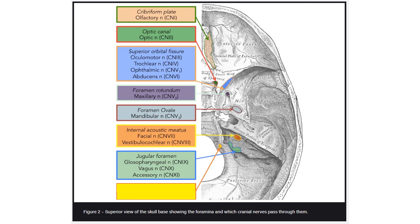The final foramen, the hypoglossal canal, through which the hypoglossal nerve passes.